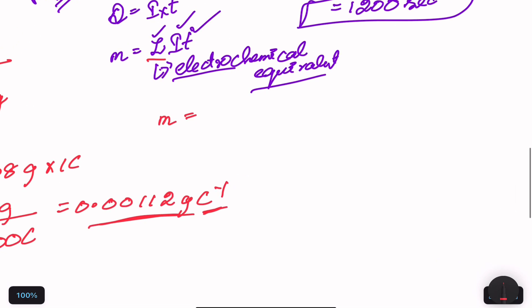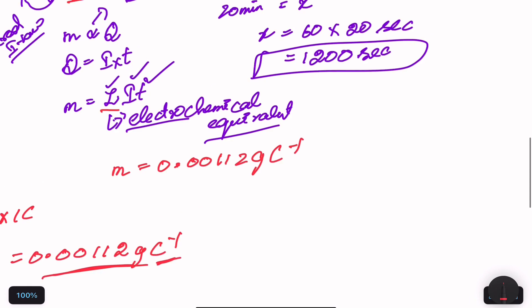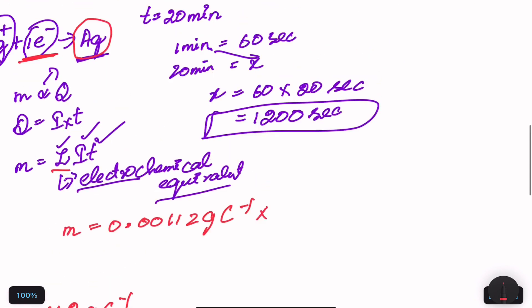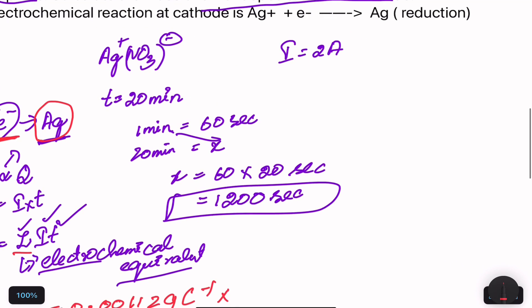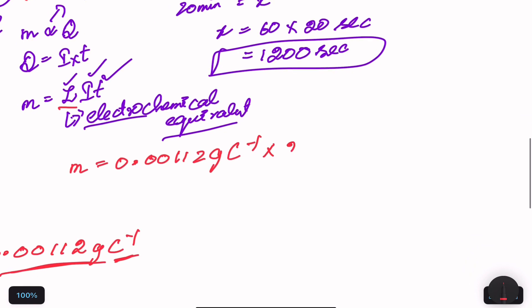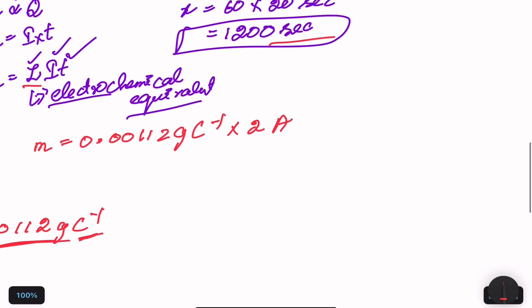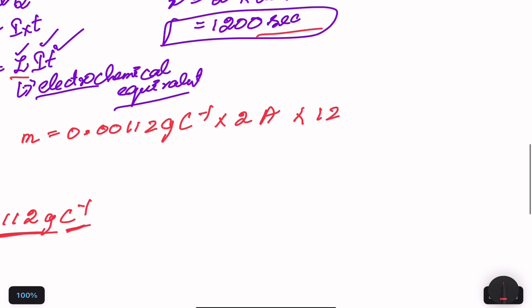Now substituting all values into m = z × i × t: z is 0.00112 grams Coulomb inverse, current i is 2 ampere, and time t is 1,200 seconds.